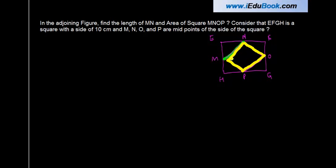So MNOP is this square. We need to find out the length of MN and the area of the square MNOP. Consider that EFGH is a square with side 10 centimeters, and M, N, O, P are the midpoints of the sides of the square.